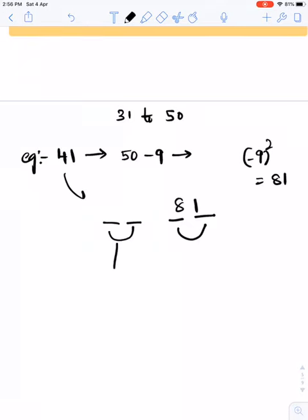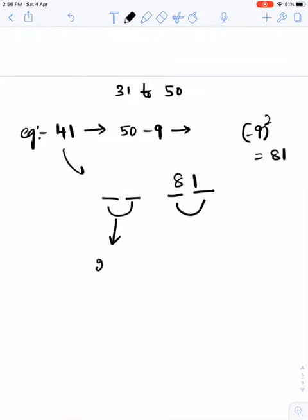And the first two digits will be 25 minus 9. 25 is a standard number you have to remember. 25 minus 9, that is 16. So the answer will be 1681.